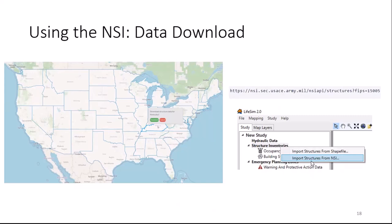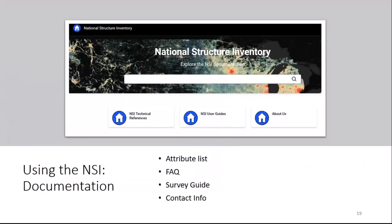If you're a Corps employee or a federal employee like FEMA, you can access a private version with additional licensed data fields that can't be released to the general public. That version also includes raw input data, so if you don't trust a field's ground truth, you can examine what the raw data said and give extra scrutiny to fields that weren't directly observed. Our documentation page has technical information on what attributes are in the NSI and information on common issues.